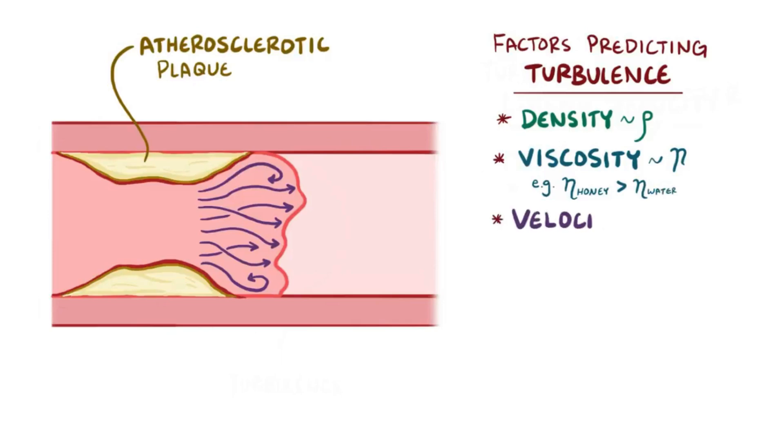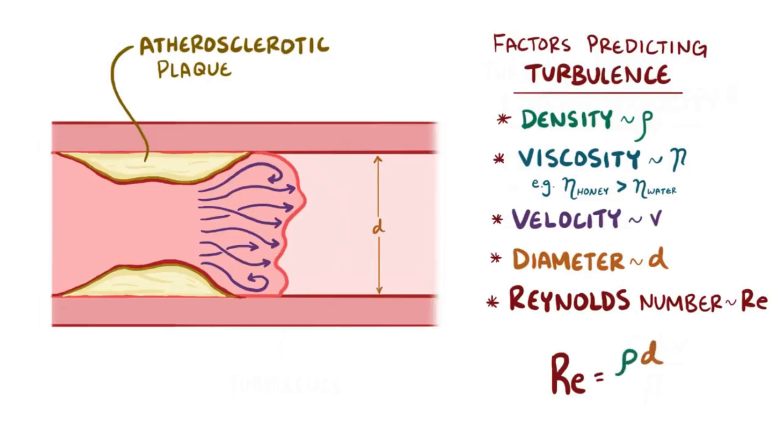After that, there's the velocity of blood flow, or just v, and then finally there's the diameter of the blood vessel, or d. These can all be used to come up with a single value, the Reynolds number, and the equation goes like this: Reynolds number equals density times diameter times velocity, all over viscosity.